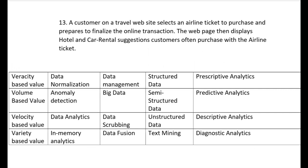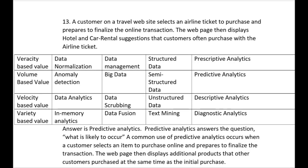Number thirteen: a customer on a travel website selects an airline ticket to purchase and prepares to finalize the online transaction. The webpage then displays hotel and car rental suggestions that customers often purchase with the airline ticket. That's an example of predictive analytics. Predictive analytics answers the question: what is likely to occur? It commonly occurs when a customer selects an item and the webpage displays additional products other customers purchased at the same time.